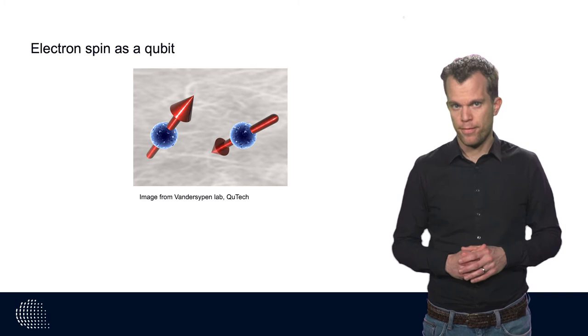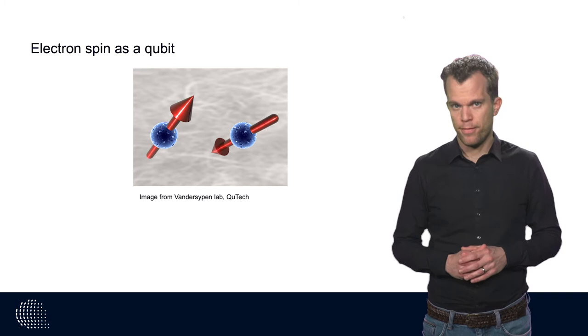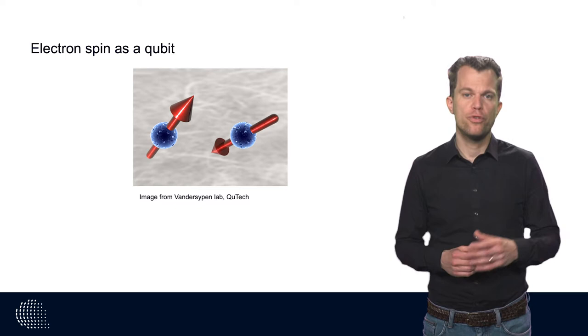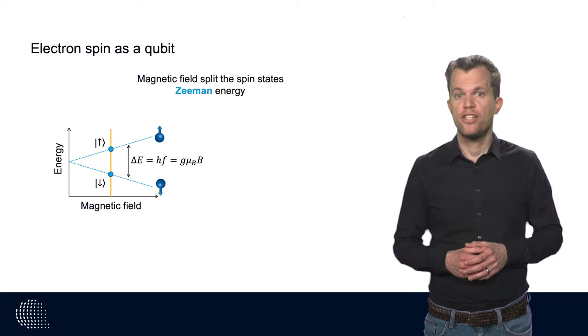The prototypical qubit is the electron spin. The quantum mechanical spin states of an electron split in a magnetic field due to the Zeeman interaction. In a magnetic field, there are states spin up and spin down, and these are separated by the Zeeman energy.